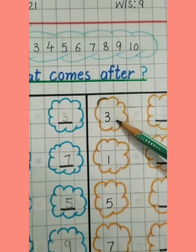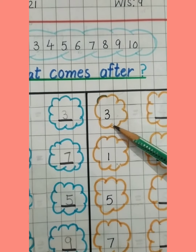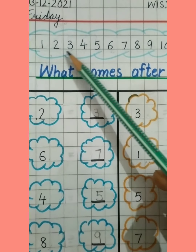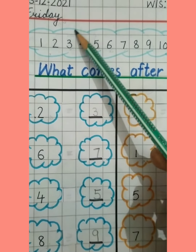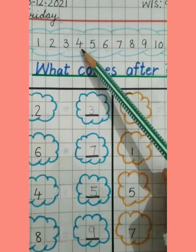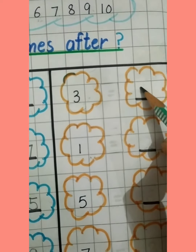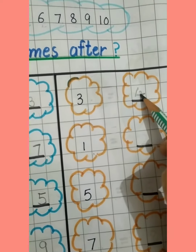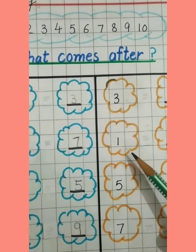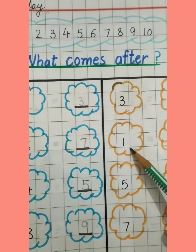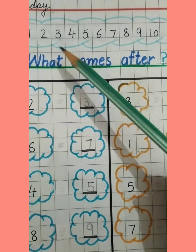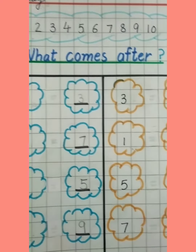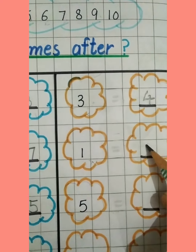This is number 3. Number 3 — and what comes after 3? 1, 2, 3 — and after 3 is 4. So yahan par ham likhenge number 4. This is number 1, and after 1 is 2. 1 ke baad 2 aata hai, so humein yahan par 2 likhna hai.